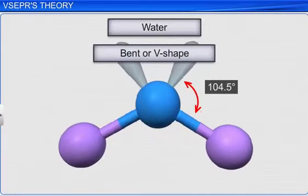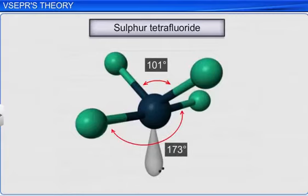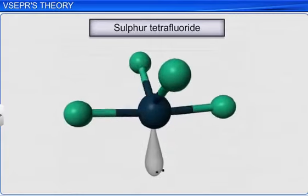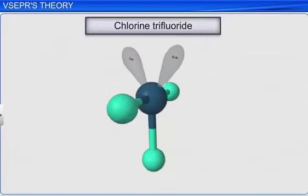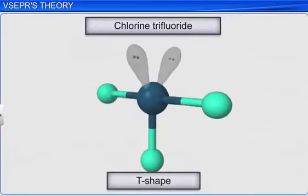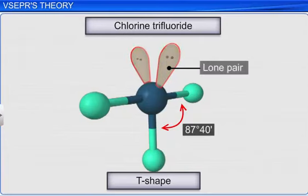A sulfur tetrafluoride molecule is seesaw-shaped, as its bond angles are 101 and 173 degrees, due to the lone pair of electrons present on its central atom. The chlorine trifluoride molecule is T-shaped with a bond angle of 87 degrees 40 minutes, and the molecule's shape is distorted due to the two lone pairs of electrons on the central chlorine atom.